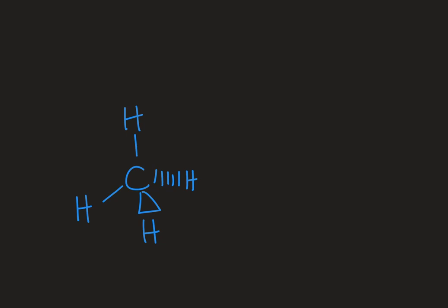This allows me to show something that is three-dimensional on a two-dimensional page. I'm using a wedge to show things that are coming out at me. So that'd be sticking out of the screen at you. And then I'm using a dash to show anything that's going back. And that allows me to show that it's not a two-dimensional structure.